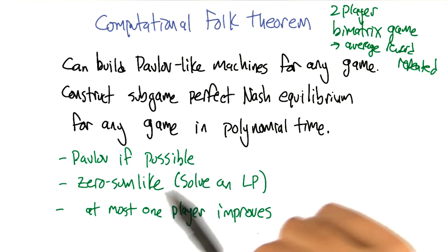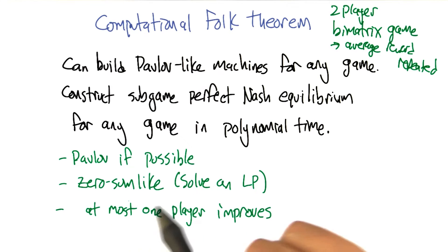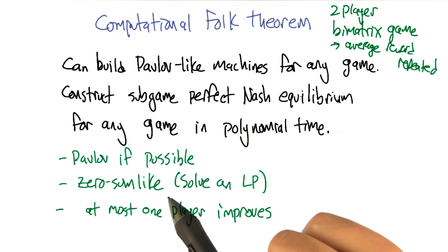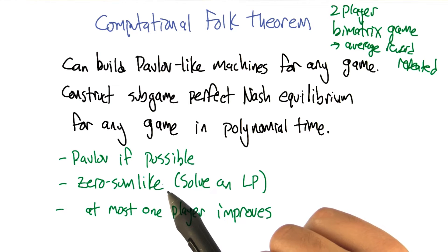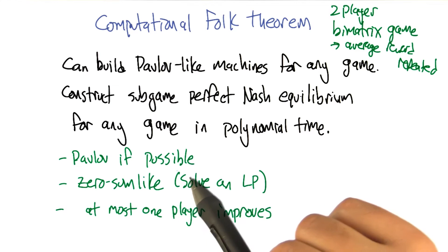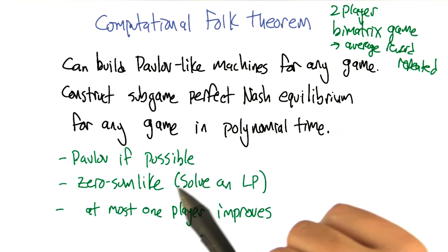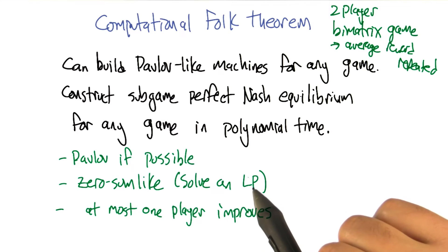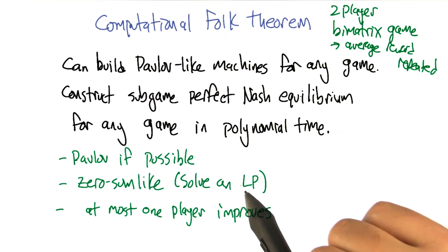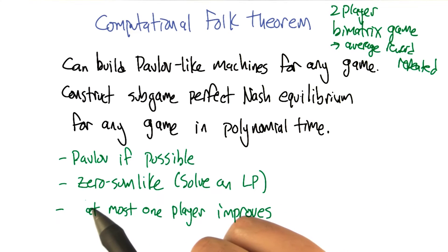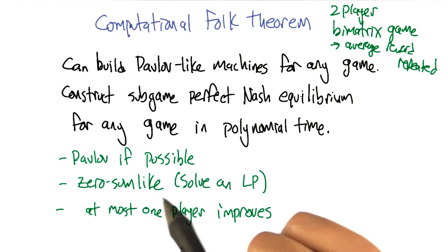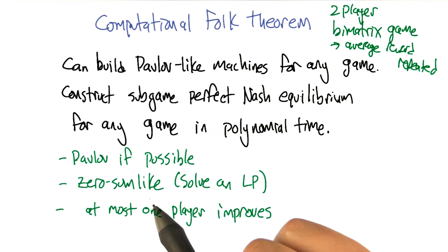If not, then the game is actually zero-sum-like. Because in a zero-sum game we can't mutually benefit, so we can't do anything like Pavlov — we're just going to beat each other up. We can actually solve a linear program in polynomial time and work out what the strategies would be if we're playing a zero-sum-like game.